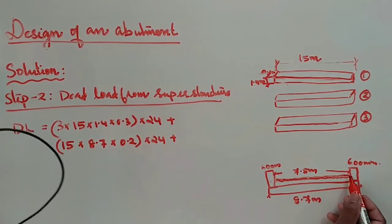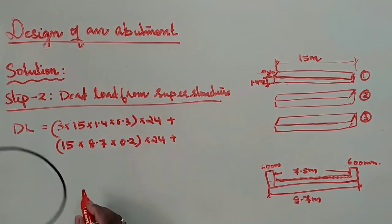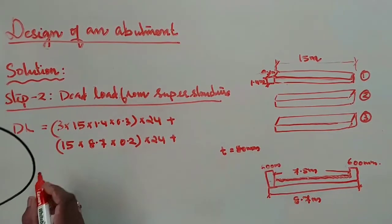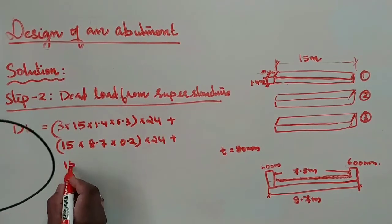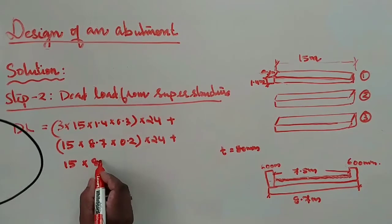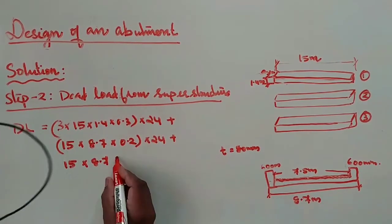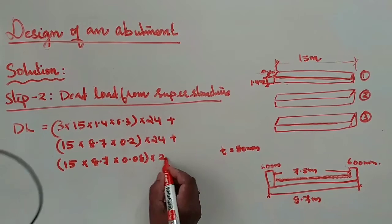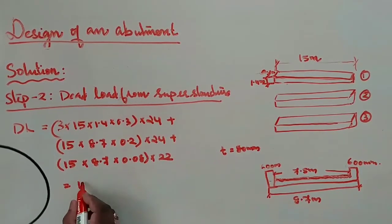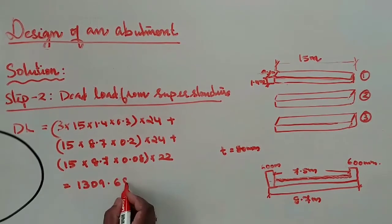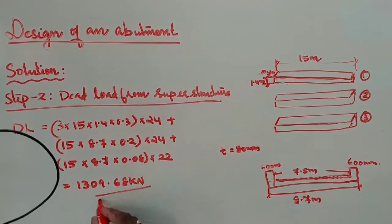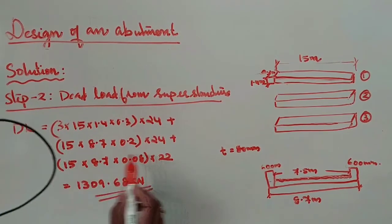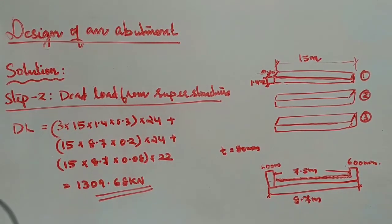Plus the wearing coat: assume a thickness of 80 mm. Wearing coat calculation: length 15 m × breadth 8.7 m × depth 0.08 m × unit weight 22 kN/m³. The total dead load, including girder weight, deck slab weight, and wearing coat weight, comes to 1309.68 kilonewtons.